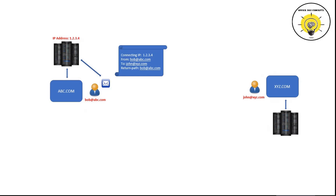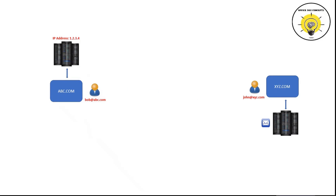The connecting IP address will be the IP address of the sender's email server which is going to process that particular email, and the return path will be bob@abc.com. The return path is the email address to which an NDR or bounce-back message will be sent in case the email is not delivered to the recipient. This email will then be sent to john@xyz.com and processed by the email server of xyz.com organization.